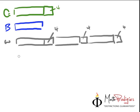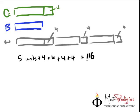Therefore, all you have to do is add it up. So five units plus four plus four plus four plus four equals 116. Therefore, five units plus sixteen gives you 116.